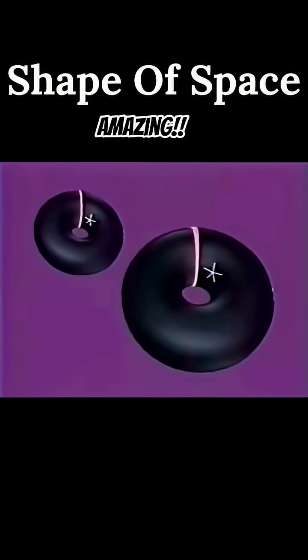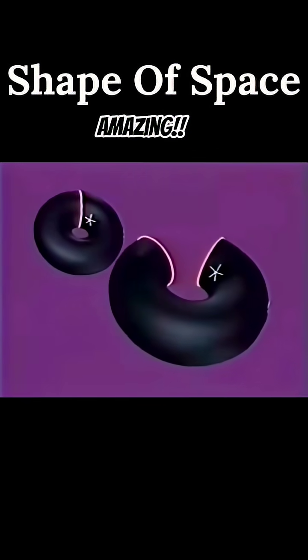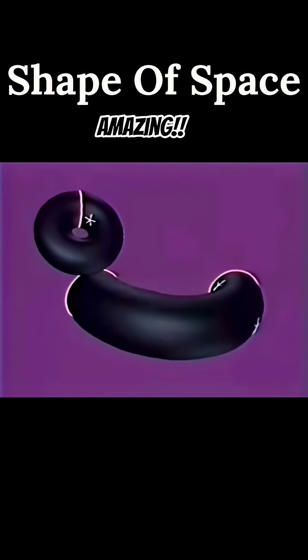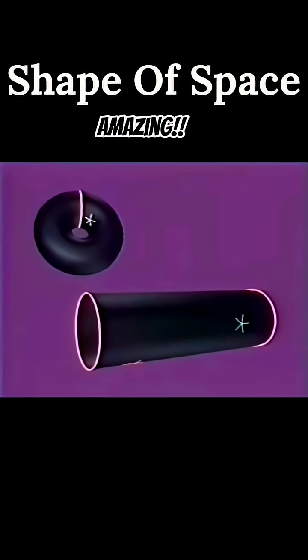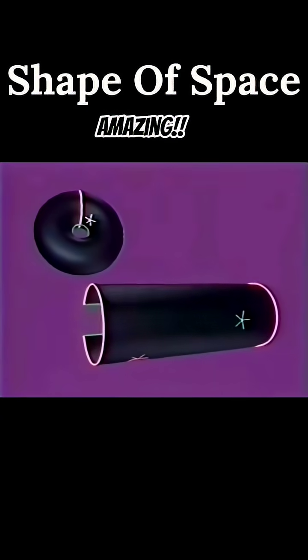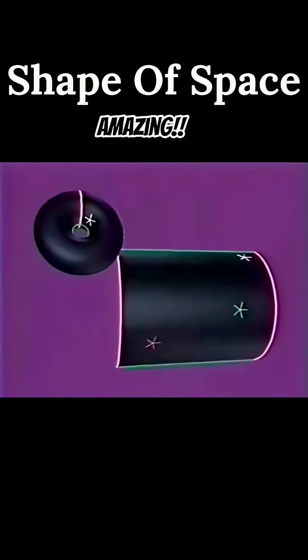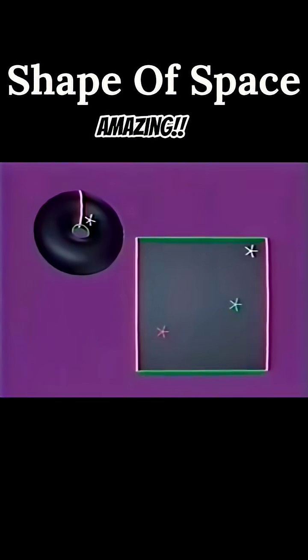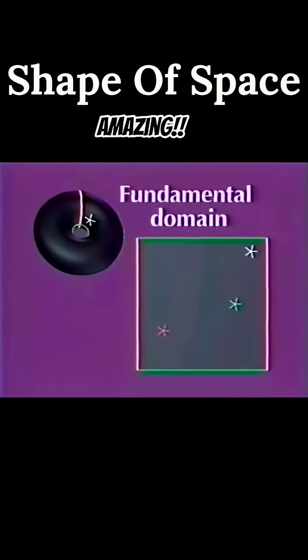Cut the torus once, and deform it into a cylinder. Cut it again, and open it into a square. This square is a fundamental domain for the Flatlanders' universe.